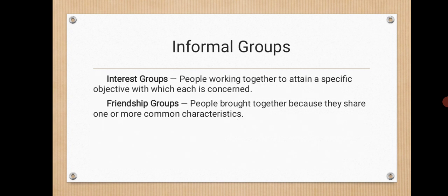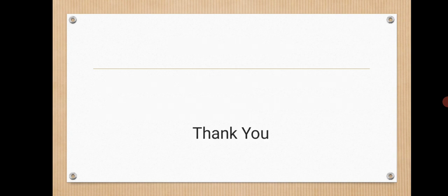In informal groups there are two types: interest groups and friendship groups. Interest groups are people working together to attain a specific objective with which each is concerned. Friendship groups are people brought together because they share one or more common characteristics.